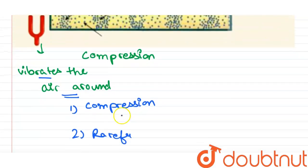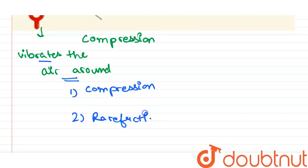What happens is that in the compression region, particles are close together, and in the rarefaction region, they are apart. In compression, pressure is high; for rarefaction, pressure is low.